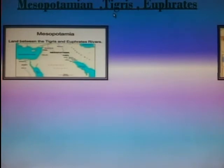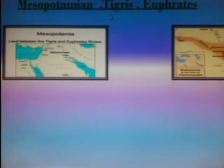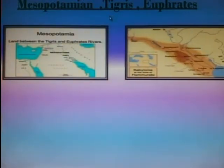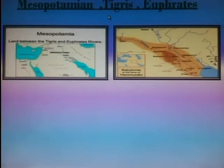The first ancient societies arose in Mesopotamia and Egypt in the Middle East. They built cities and invented forms of writing. The early river valley civilizations include the Mesopotamian civilization along the Tigris and Euphrates rivers, the Indus Valley civilization near the river Indus, ancient Egypt near the river Nile, and the Chinese civilization along the Yellow River.